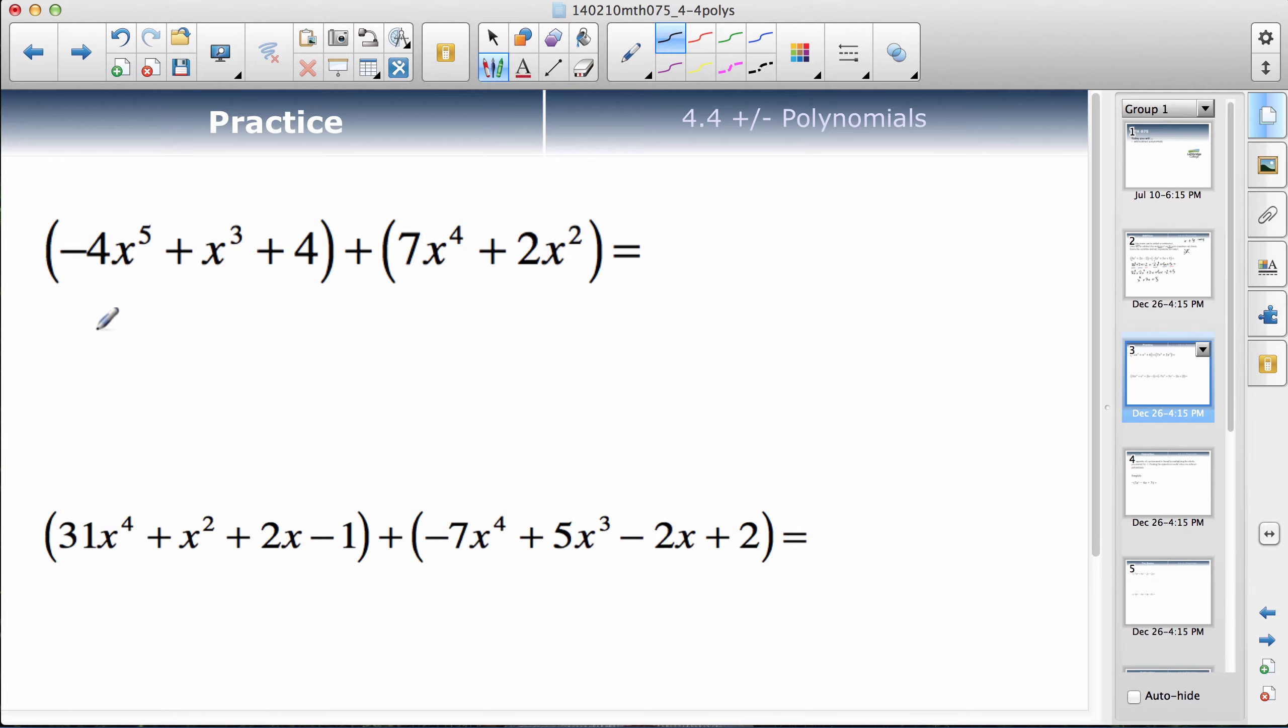Okay, I assume you pressed play again. In this one, since it's adding, I'm just going to drop the brackets. x to the 5, there's no other x to the 5, so I'll leave that one alone. x to the fourth, there's only one of those, so I'll just write that one.